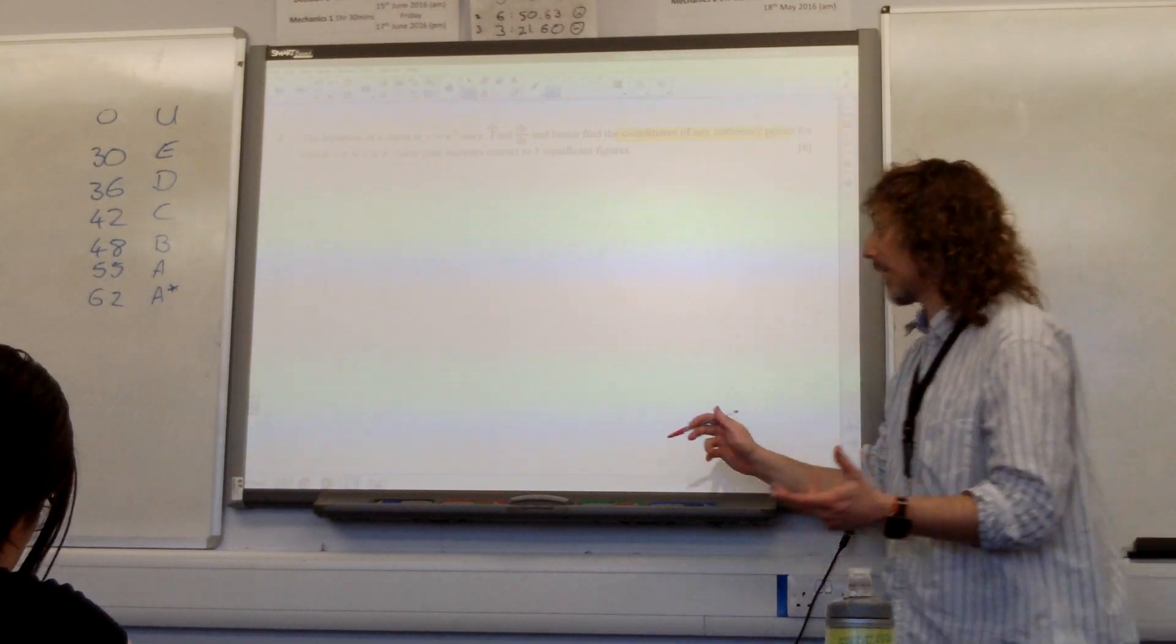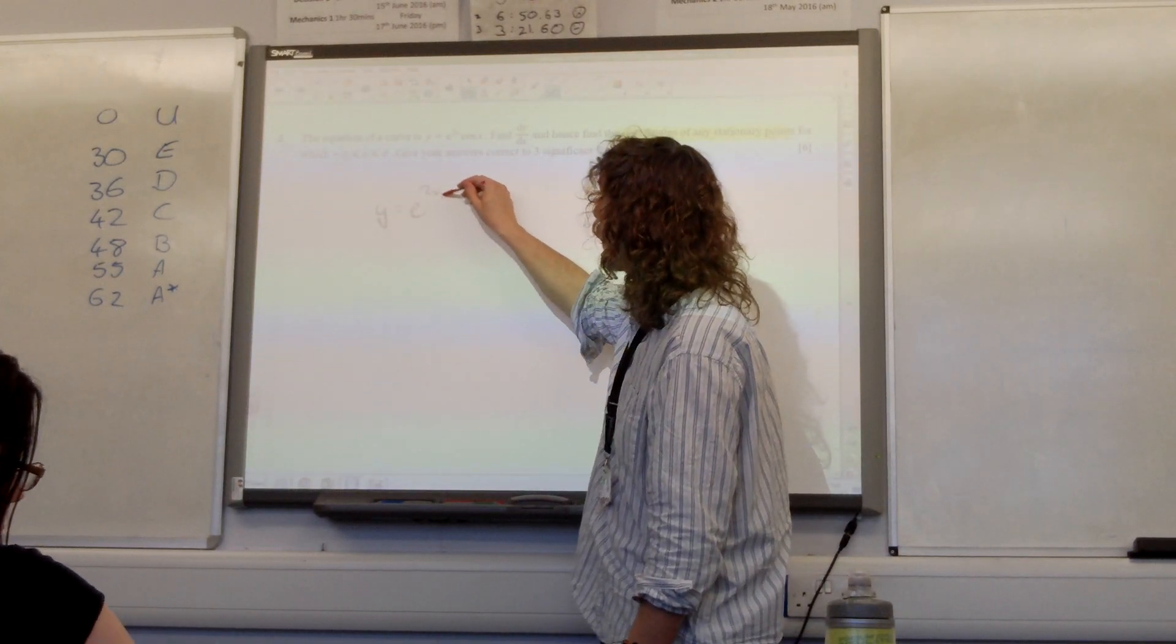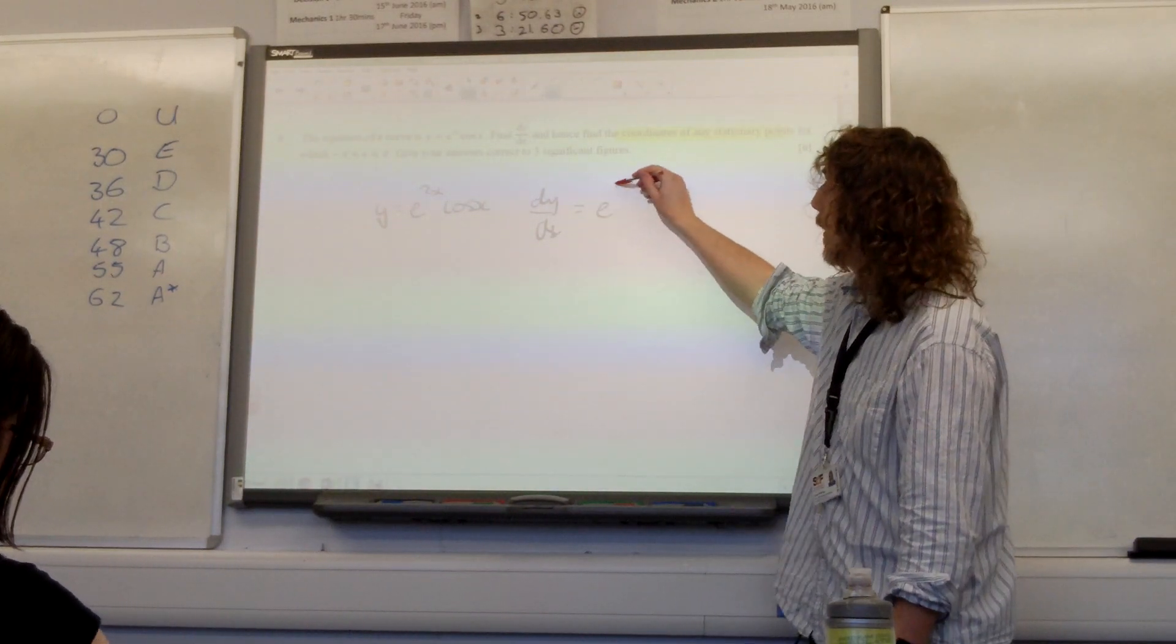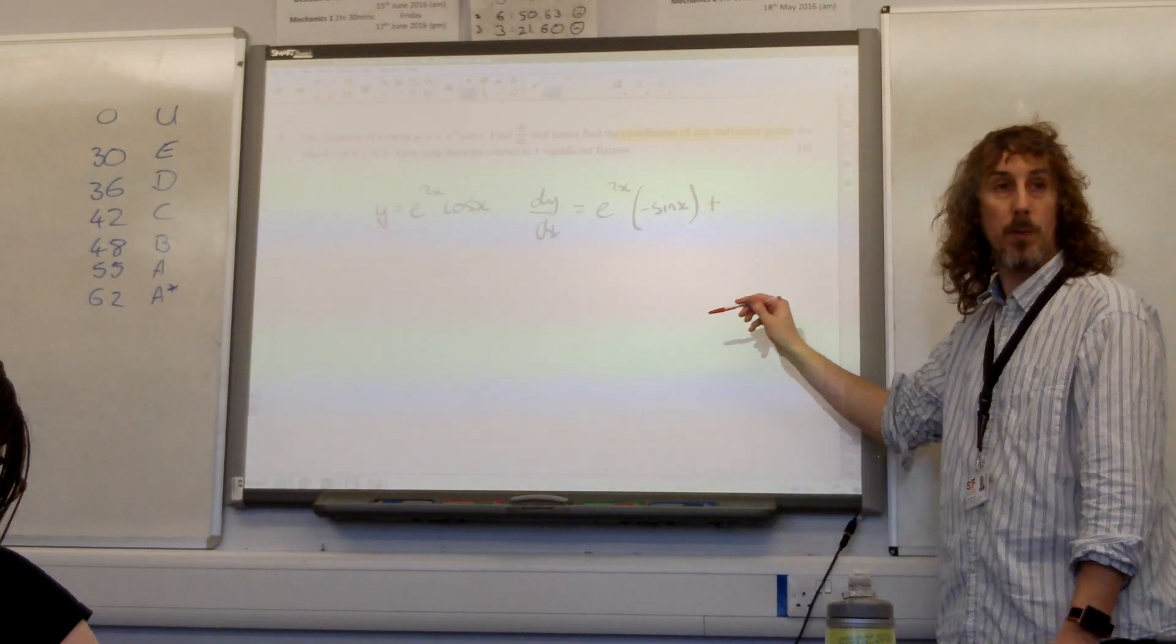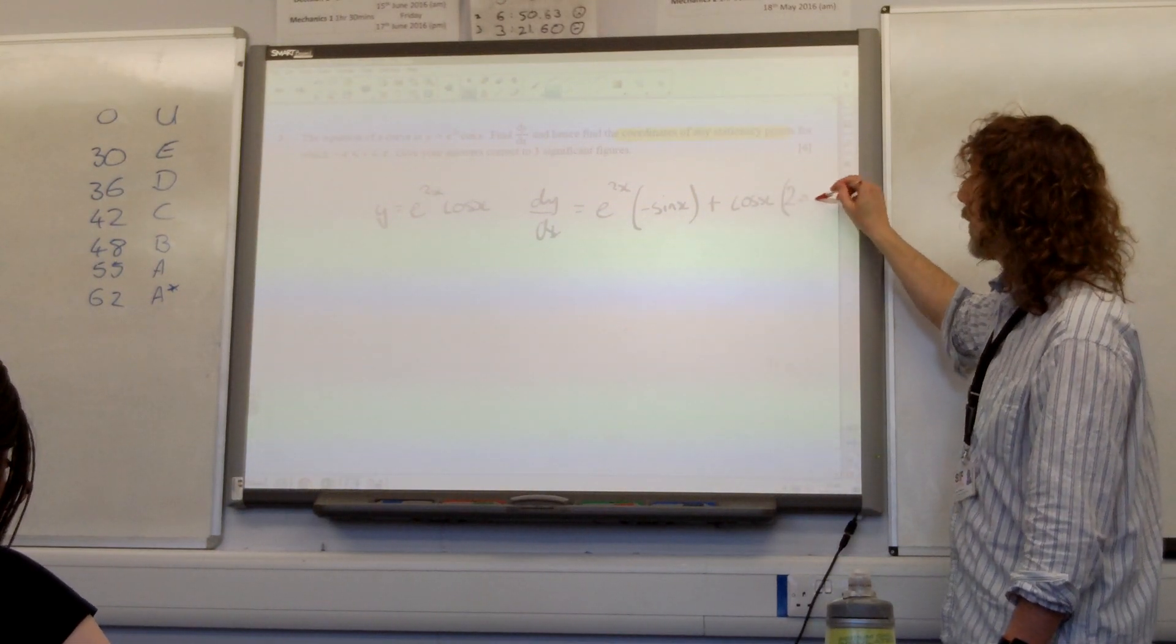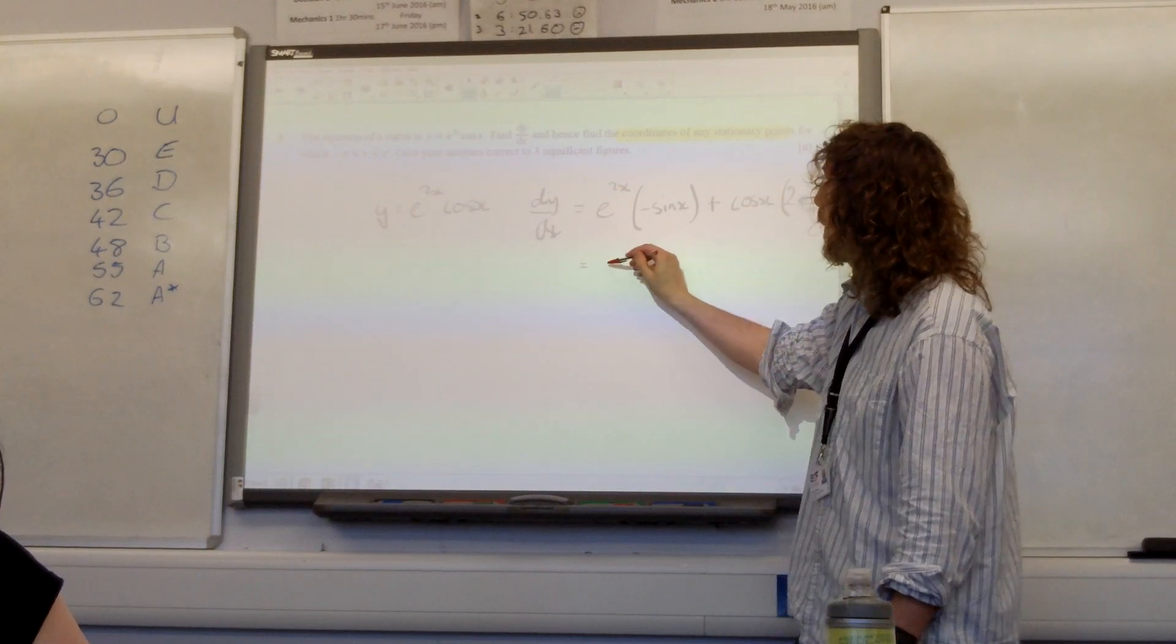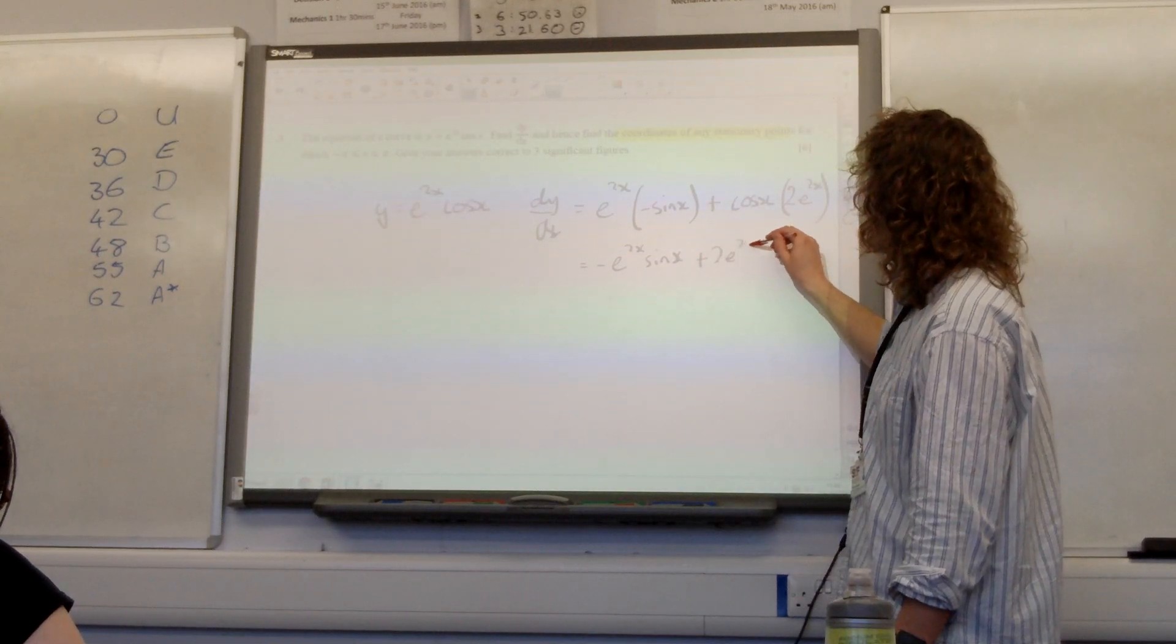OK. So we spotted, didn't we, that this was a product rule question. So dy/dx is the first times the derivative of the second, plus the second, which is cos(x), times the derivative of the first, and e^(2x) goes to 2e^(2x). So our expression for dy/dx is -e^(2x)*sin(x) + 2e^(2x)*cos(x).